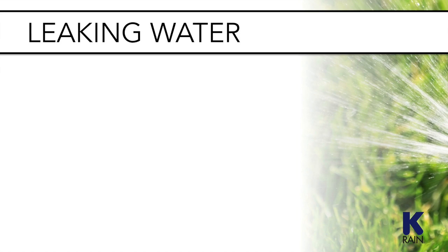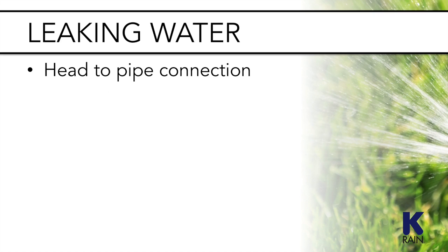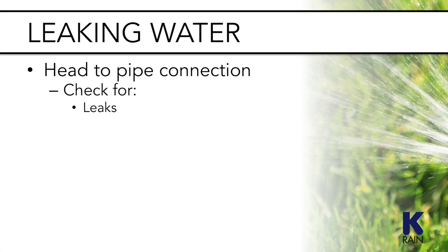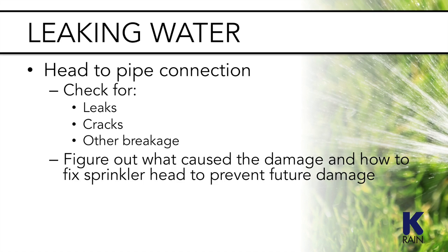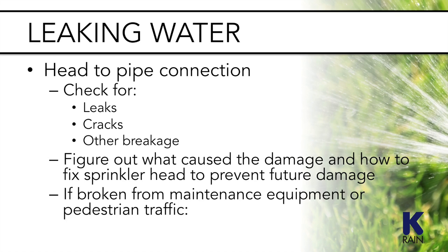The other common cause for leaks around the sprinkler head is the head-to-pipe connection. Check for leaks, cracks, or other breakage. It is also a good idea to figure out what caused the damage and how to prevent it in the future. If the connection has been broken by maintenance equipment or pedestrian traffic, you should install a more robust and flexible swing joint to absorb the impact when people or equipment run overhead.